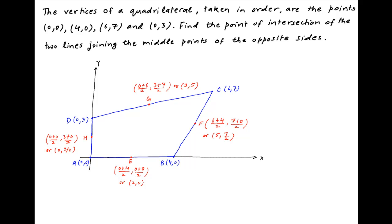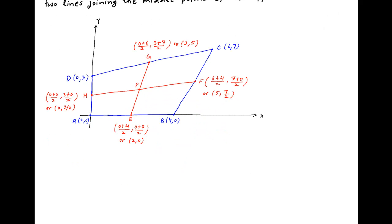Now we join the midpoints of the opposite sides of the quadrilateral — so join H to F and G to E. Let's assume that these two lines meet at the point P, whose coordinates are to be determined.